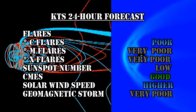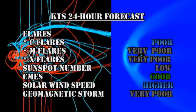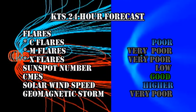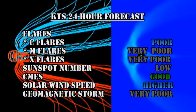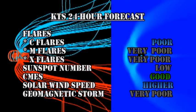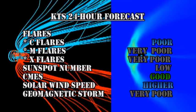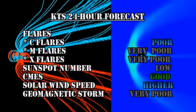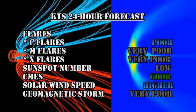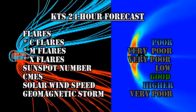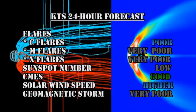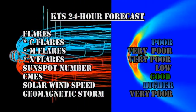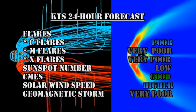My forecast for the next 24 hours is that there is a remote chance of C flares, but a very unlikely possibility of getting M or X flares. The sunspot number will remain low, the chance of getting coronal mass ejections is good, the solar wind speed will edge higher, and the chance of a major geomagnetic storm in the next 24 hours is quite remote.